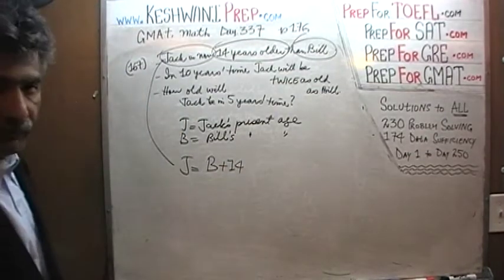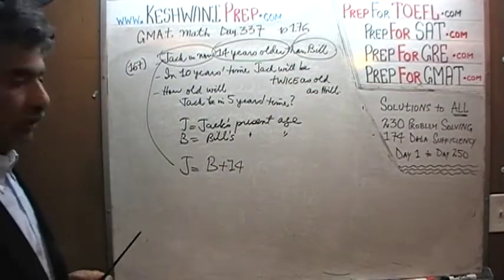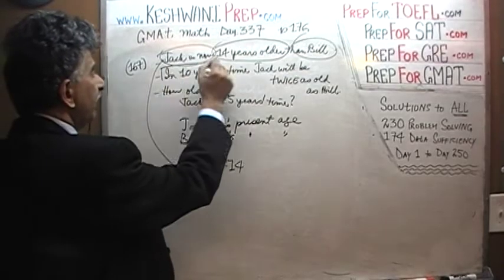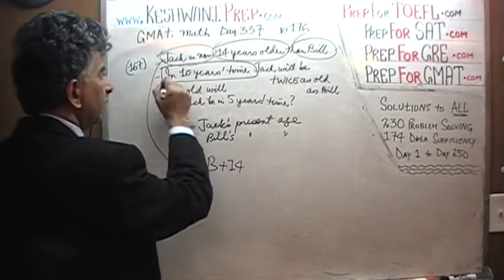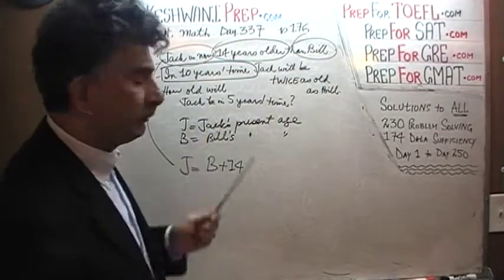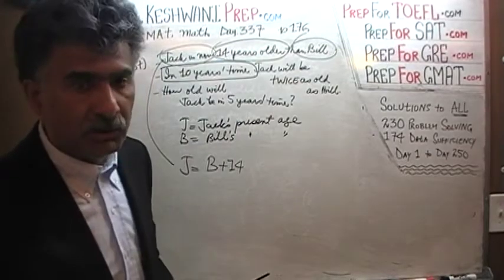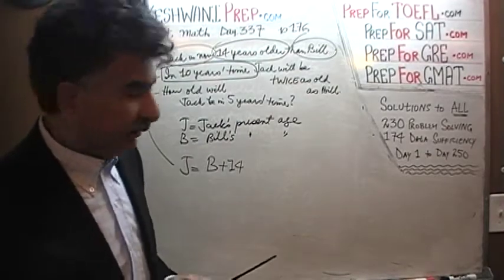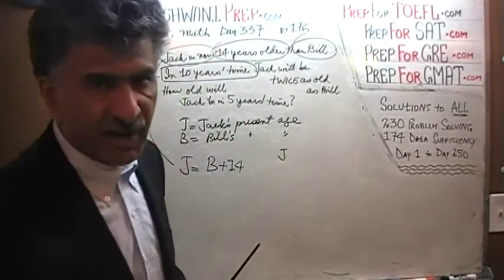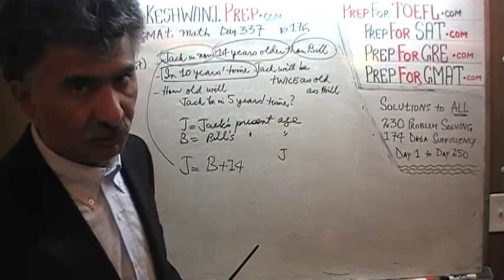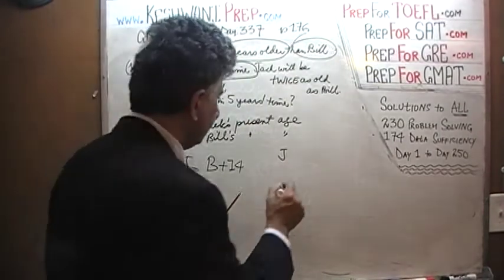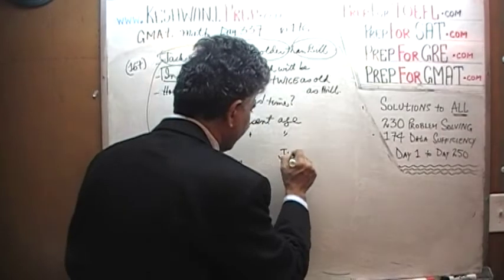That was quite straightforward. Now let's see what we can do for the second equation. In the second equation, we are dealing with 'in 10 years' time.' In 10 years' time, how old will Jack be if Jack's current age is J? If Jack is J years old today, then in 10 years' time it will be J plus 10.